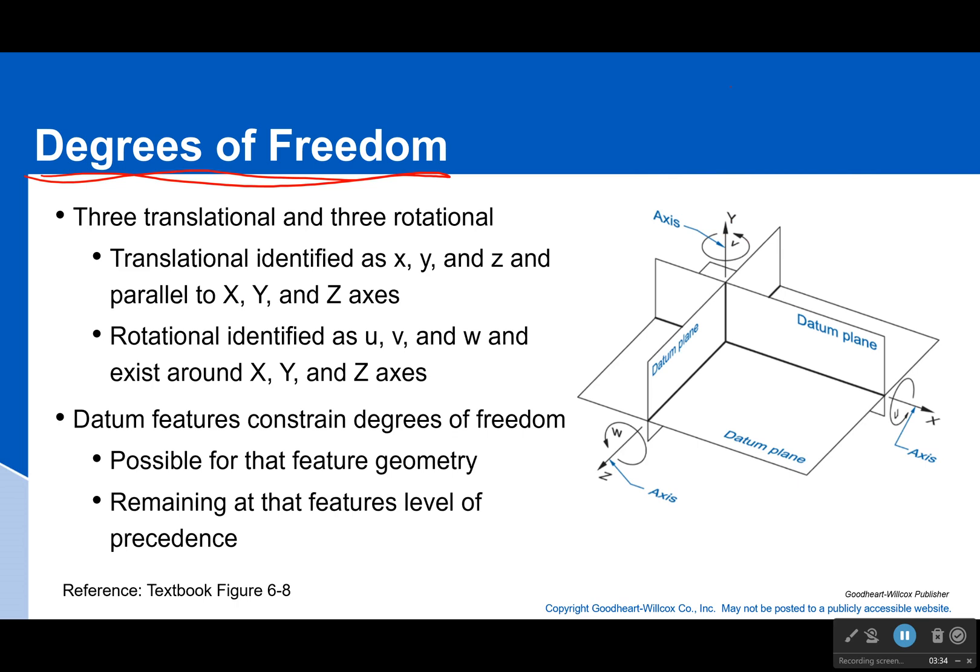Okay, so we want our datums to constrain different degrees of freedom. That's why we're choosing them. That first datum says I can't move through the ground anymore. And therefore, if I can't move through the ground, I can't rotate because that would make me go through the ground and out of these directions. So that got rid of three degrees of freedom.